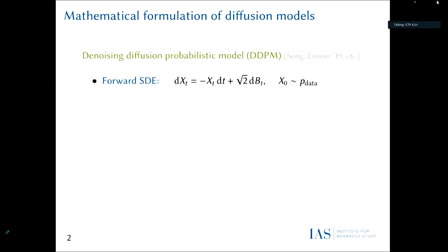I want to talk about how we can try to study them mathematically. So the mathematical foundations: we start with some forward diffusion process. For the sake of theory, we consider the simplest canonical one, which is a forward Ornstein-Uhlenbeck process, or OU process. This is an SDE whose stationary distribution is standard Gaussian, and this process is initialized with the data distribution pData — think of pData as your distribution over images. So I start with an image, and then this process is turning it into noise.